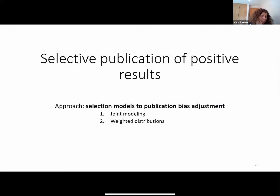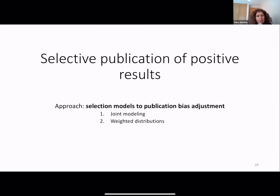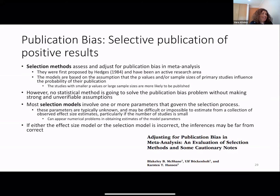In selection models, the publication bias pressure is introduced into the model used to estimate the meta-analytic overall effect size. We will discuss two approaches: one based on joint modeling and the other based on weighted distributions. Selection methods assess and adjust for publication bias in meta-analysis; they were first proposed by Hedges and have been an active research area. The models are based on the assumption that p-values and/or sample size of primary studies influence the probability of their publication. Studies with smaller p-values or larger sample sizes are more likely to be published.